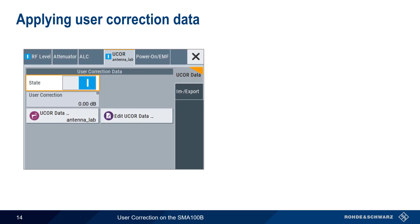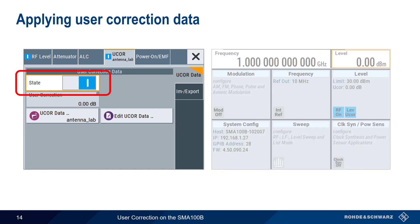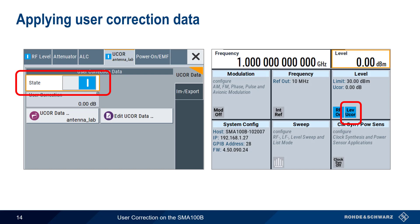Applying User Correction data is very simple. Just select a User Correction data file, and then switch User Correction on. Note that when a User Correction file is active, this is shown in the Level block of the SMA main GUI.